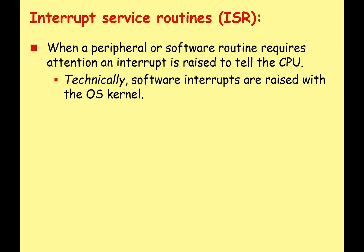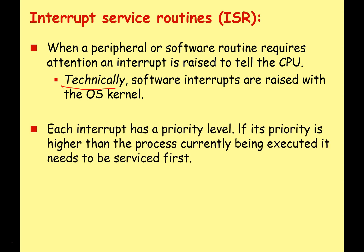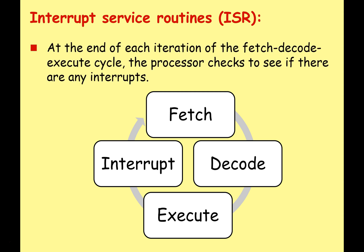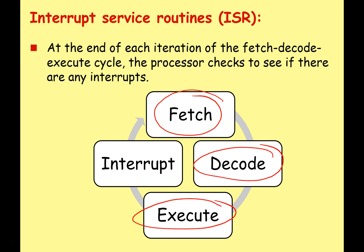Taking a closer look at ISRs: when a peripheral or software routine requires attention, an interrupt is raised to tell the CPU. Although technically, software interrupts are raised with the OS kernel first before getting anywhere near the CPU. Each interrupt has a priority level. If its priority level is higher than the process currently being executed, it needs to be serviced first. The operating system has interrupt service routines that determine what happens when a particular interrupt is carried out. At the end of each iteration of the fetch-decode-execute cycle, the processor checks to see if there have been any interrupts — an instruction or data is fetched from memory, any instructions are decoded, the instructions are executed, and then before it fetches the next instruction, the CPU checks if there are any interrupts it needs to deal with.